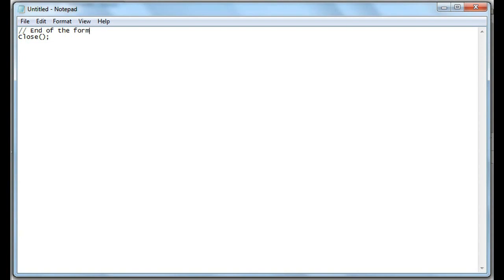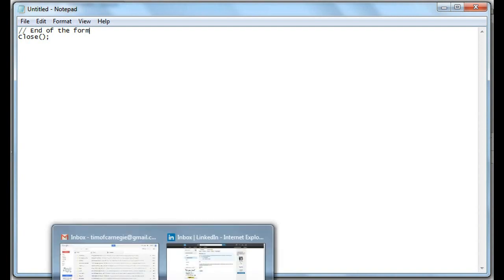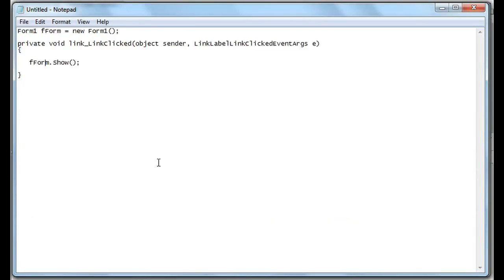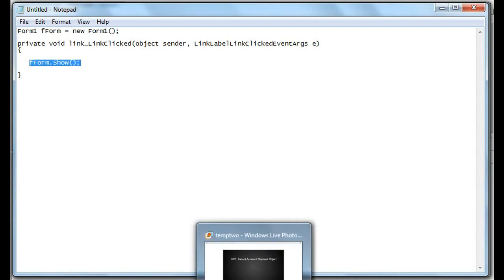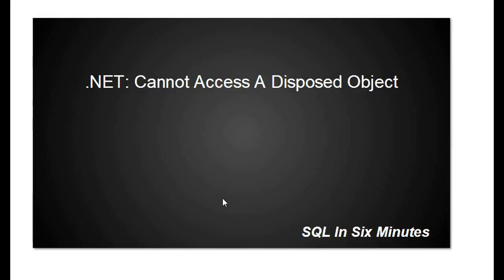Note that the object fForm is now disposed. So when we close it, it is disposed — and this is where we'll get the error. If we run our program, click the button that shows fForm, it'll load fForm. We hit submit, it closes out, goes back to the original form. Then we click on it again to load it and we'll get this error: 'Cannot access a disposed object'.